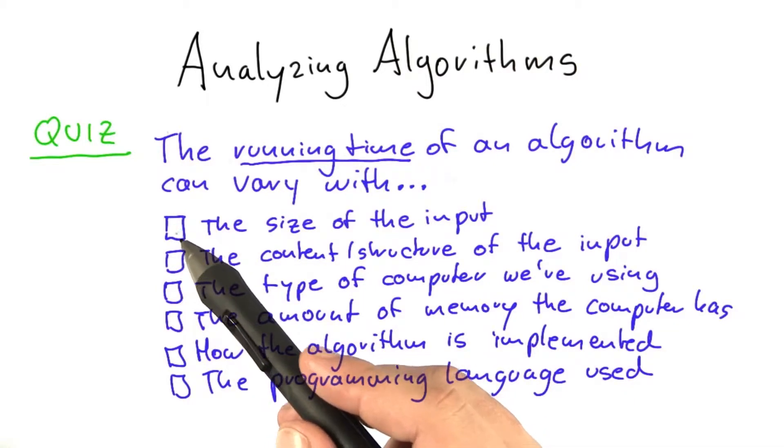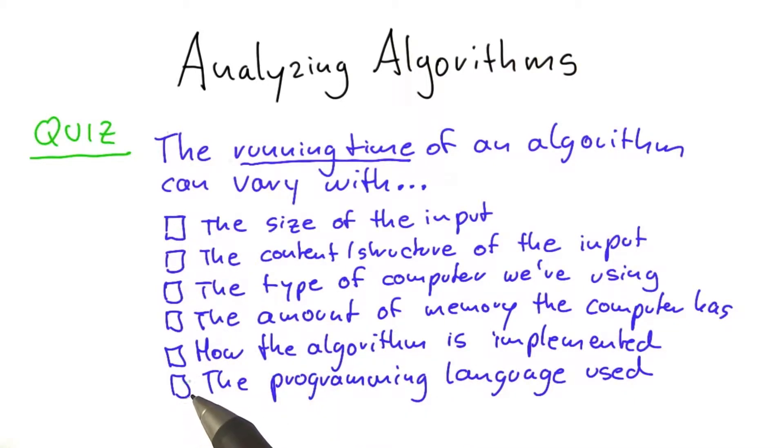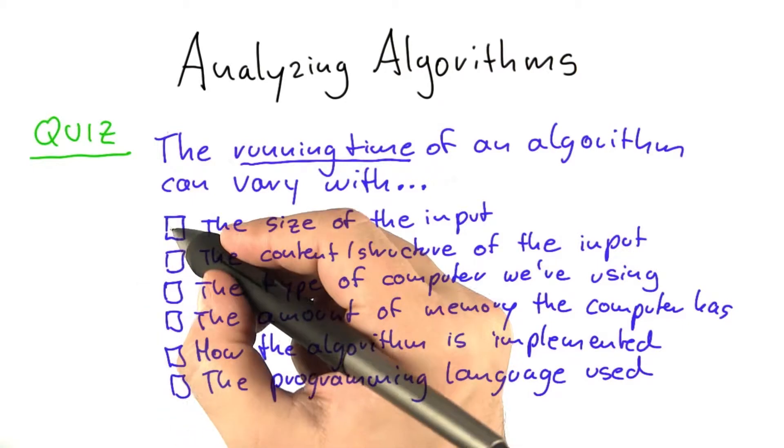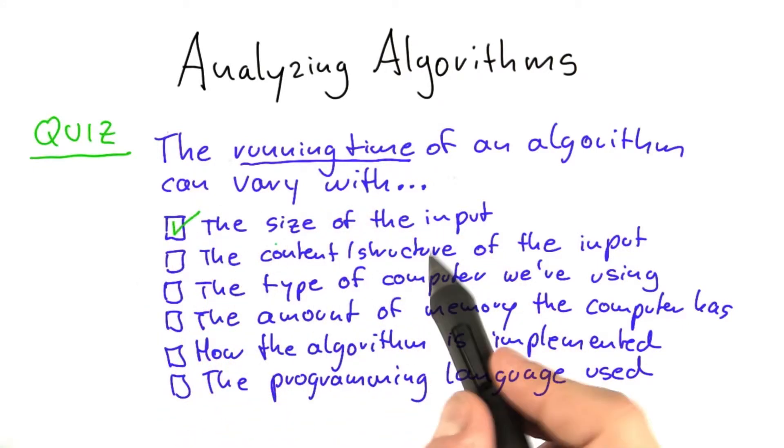The answer here is that all of these six factors can influence the running time of an algorithm. So the size of the input, I think that's a rather obvious one.